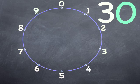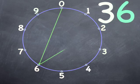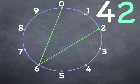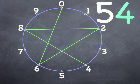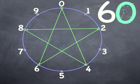Watch the green numbers as we go around again. 36, 42, 48, 54, and 60. We've created the star again.